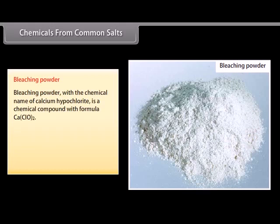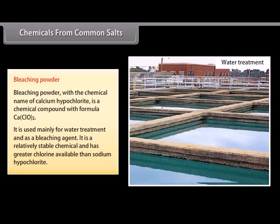Bleaching powder. Bleaching powder with the chemical name of calcium hypochlorite is a chemical compound with formula Ca(ClO)2. It is used mainly for water treatment and as a bleaching agent. It is a relatively stable chemical and has greater chlorine available than sodium hypochlorite.